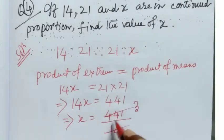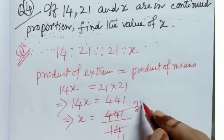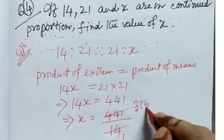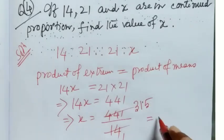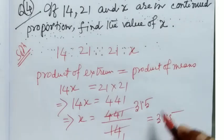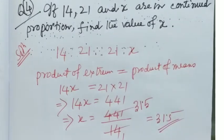Implies x is equal to 441 divided by 14. I will cut it. This is equal to 31.5, and this is the value of x.